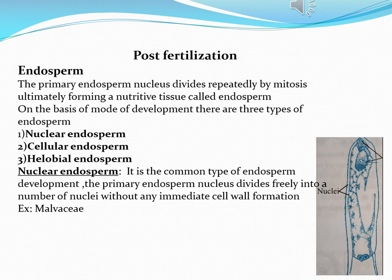Nuclear endosperm is the most common type of endosperm development. Here, the primary endosperm nucleus divides freely into a number of nuclei without any immediate cell wall formation. As we can observe in the diagram, there are a number of nuclei but no cell walls. This type of endosperm is found in the Malvaceae family.